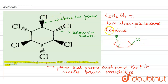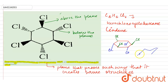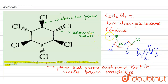The third chlorine and those present below the plane can be shown like this. This can be shown more effectively in the chair conformation. In the chair conformation, carbons one, two, and three show the above-plane chlorines, and the other three chlorines are shown below the plane.